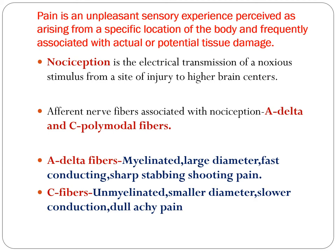Normal pain perception is the electrical transmission of nociceptive stimuli from the site of injury to the higher brain centers through A-delta or C-polymodal fibers. A-delta fibers are myelinated, large diameter, fast-conducting, and produce sharp, shooting pain. C fibers produce the dull, aching type of pain.